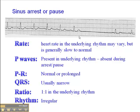In a sinus arrest or sinus pause, we see this underlying rhythm, which is typically sinus or maybe a sinus bradycardia. It's not uncommon to see an irregular sinus rhythm or irregular sinus bradycardia as the underlying rhythm, even though the P-wave morphology is consistent all along.